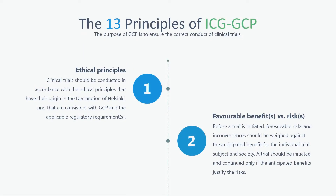The core principles of ICH Good Clinical Practice are as follows. First, clinical trials should be conducted in accordance with the ethical principles that have their origin in the Declaration of Helsinki, and that are consistent with GCP and the applicable regulatory requirements. Second, before a trial is initiated, foreseeable risks and inconveniences should be weighed against the anticipated benefit for the individual trial subject and society.